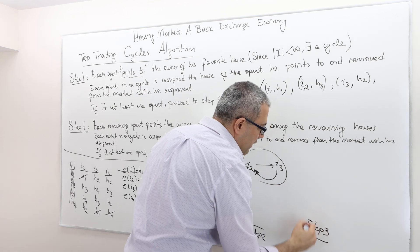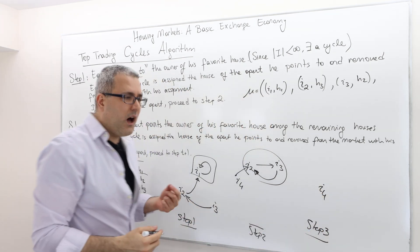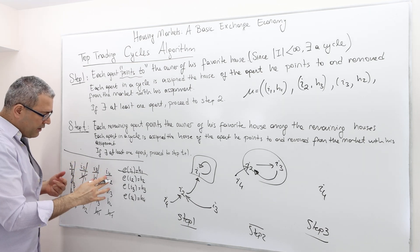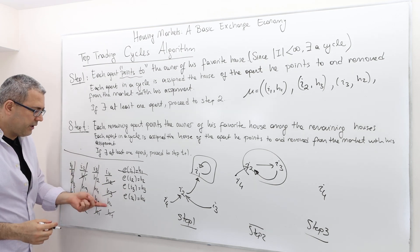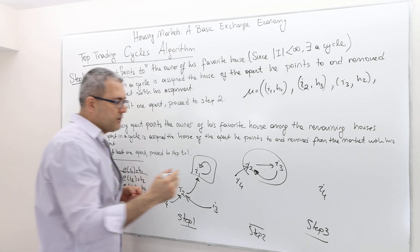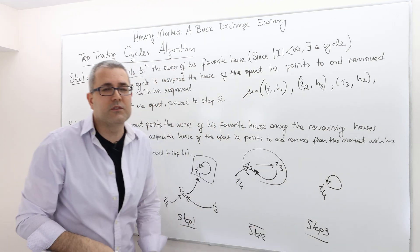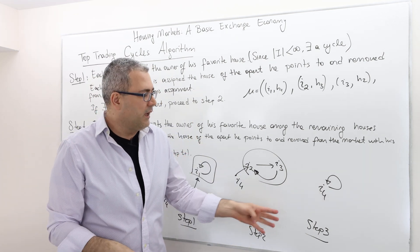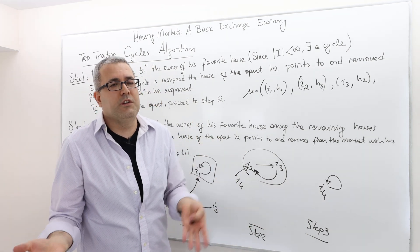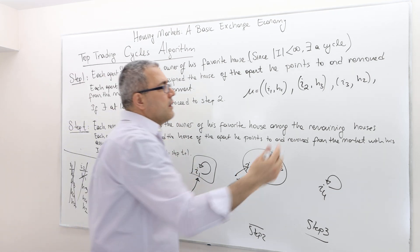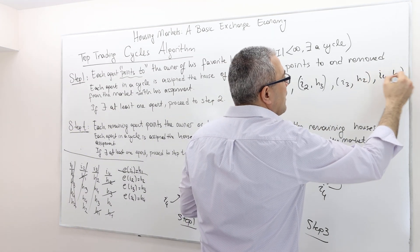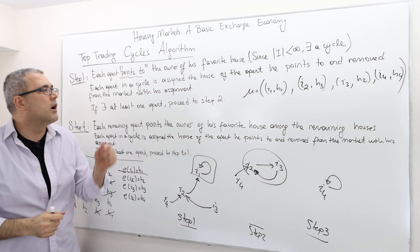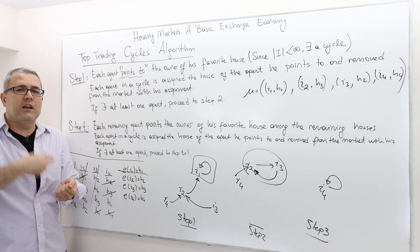Finally, in step three, I have agent four. Agents two and three are out of the picture, and houses two and three are out of the picture. There's only one house available for agent four, so obviously he cycles to himself and gets his own house — house four. So that is the allocation we get once we apply the top trading cycle algorithm.